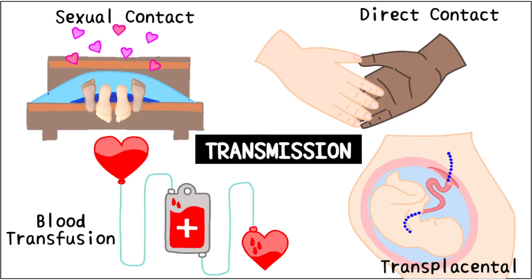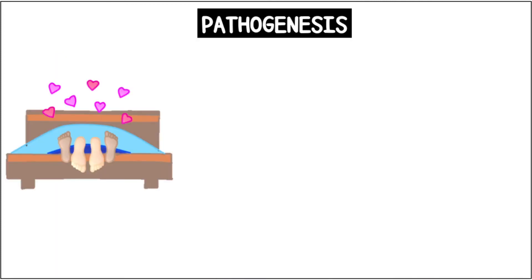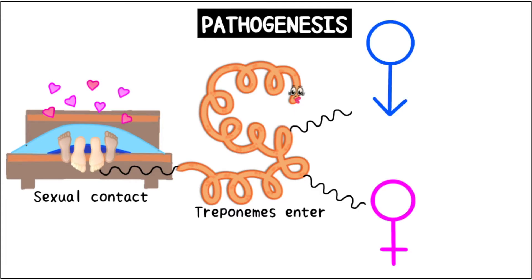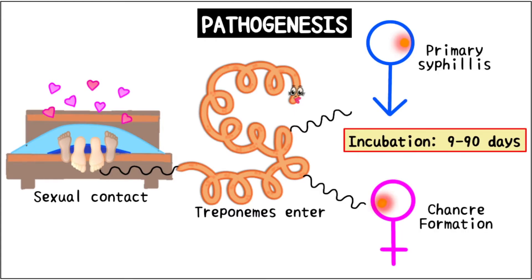The pathogenesis of syphilis is simple. After some form of sexual contact with an infected person, the treponemes enter your body through minute abrasions on the skin or the mucosa. It commonly affects the genitals in both sexes. After an incubation period of 9 to 90 days, a hard chancre forms, which is an important characteristic of primary syphilis.